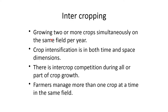Intercropping. Growing two or more crops simultaneously on the same field per year. Crop intensification is in both time and space dimension. There is intercrop competition during all or part of the crop growth, and farmers manage more than one crop at a time in the same field.